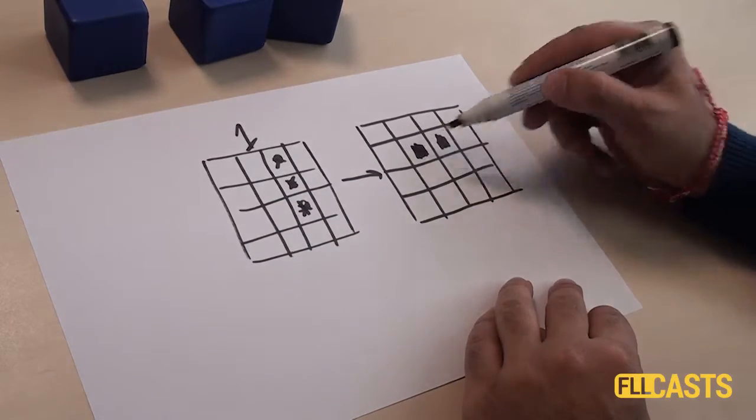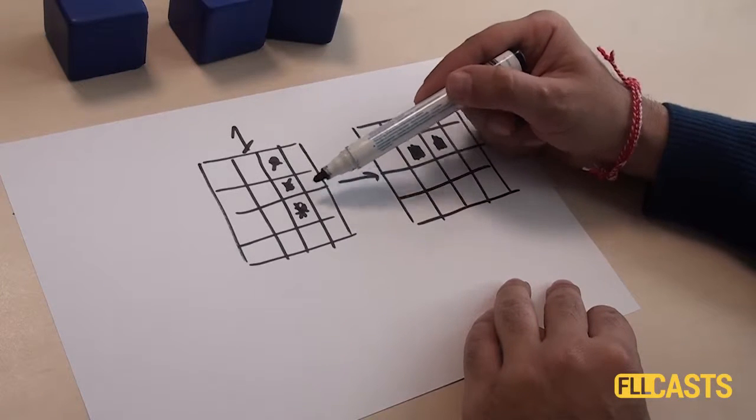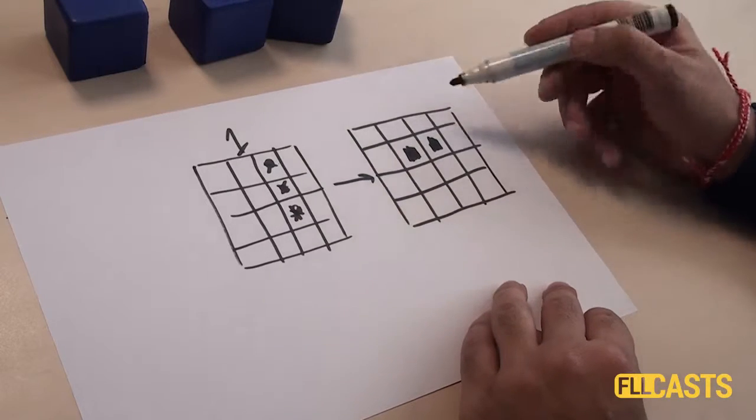And we have this cell. And we also have this cell that has 1, 2, 3 neighbors. And this means by the rules of the game that it also is reborn.